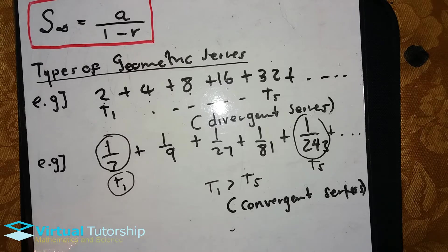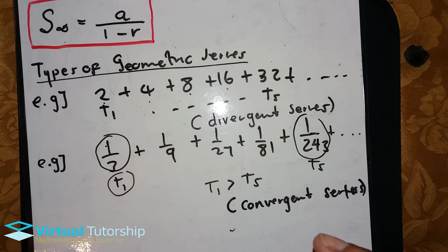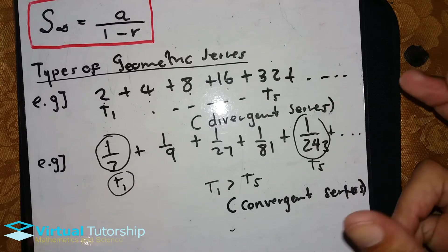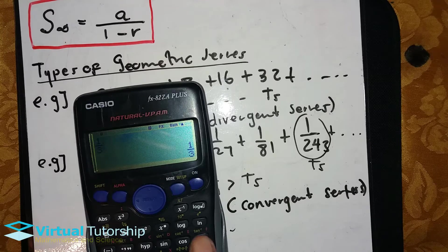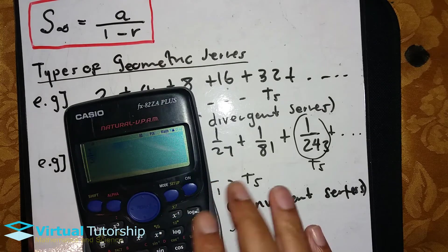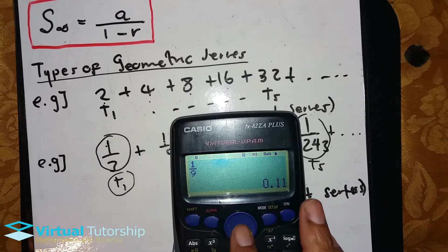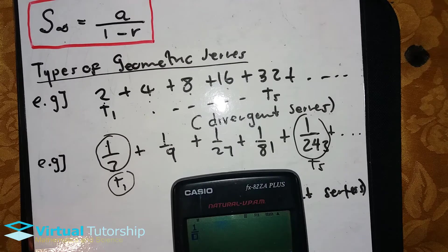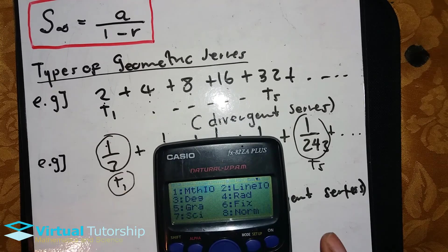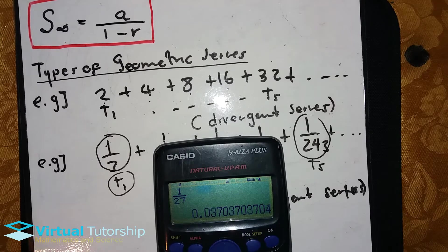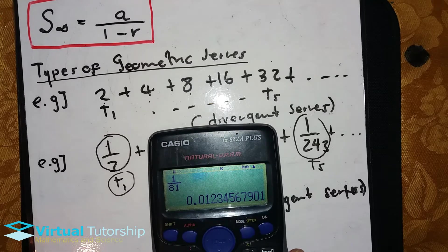It decreases to a particular value, and the more terms I add to the series, it decreases to that particular value. So T1 greater than T5: 1 over 3 is equal to 0.33, 1 over 9 is equal to 0.11, 1 over 27 is 0.04, and 1 over 81 is equal to 0.001.